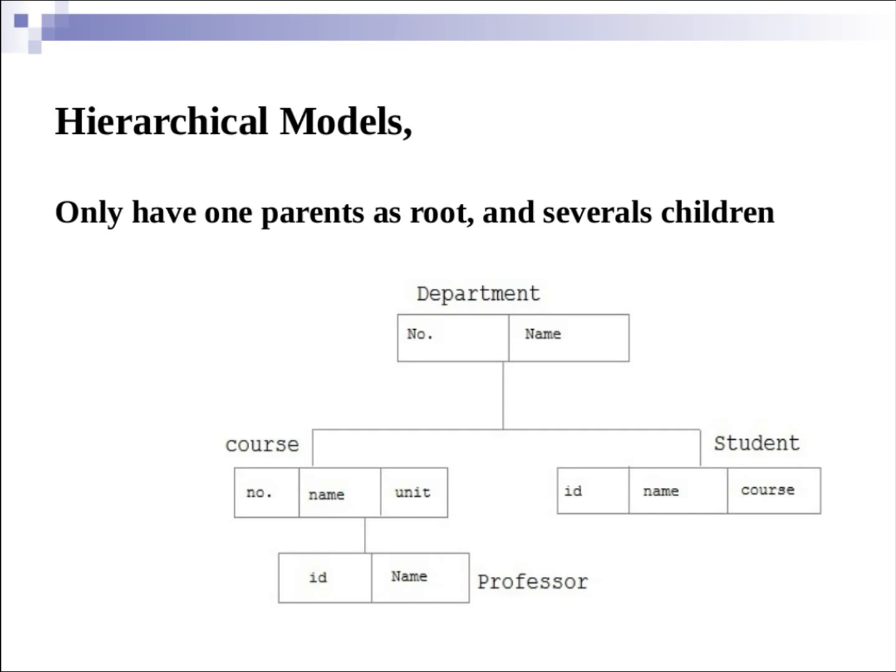Hierarchical models only have one parent as root and several children. Let's check the image below. The department table becomes parent of course table and student tables, and course table becomes parent for lecturer table.